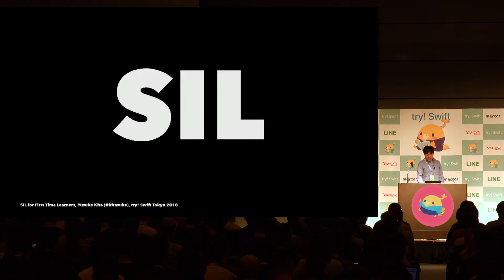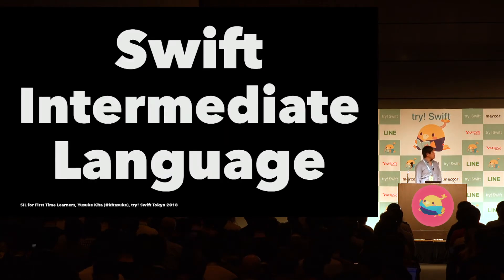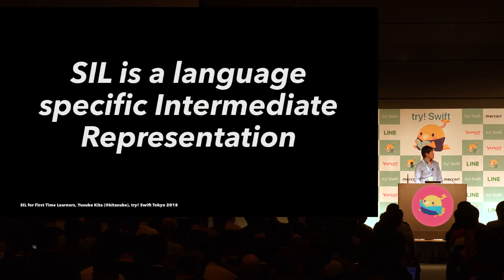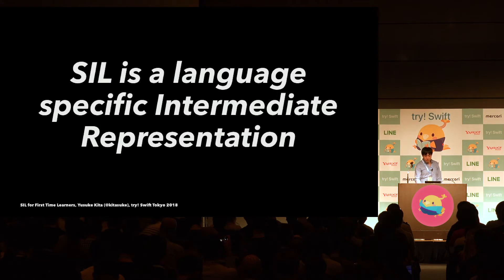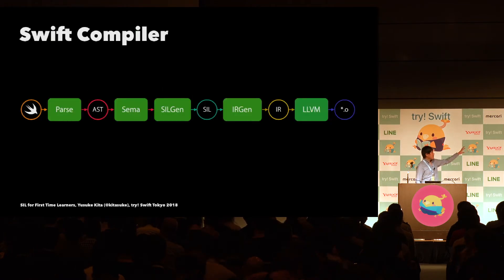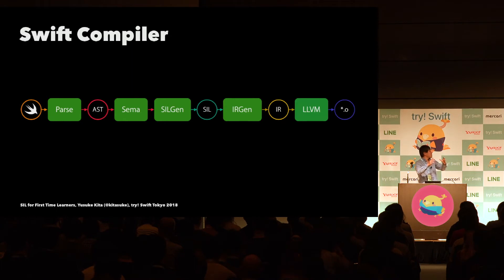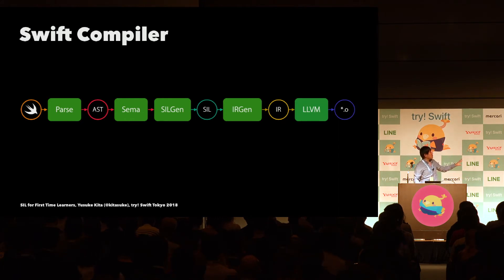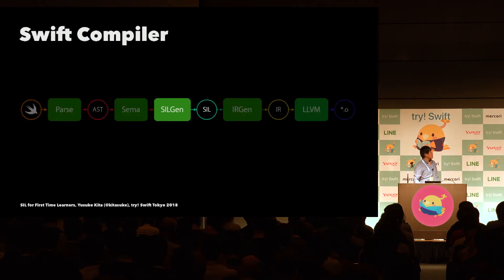So it's about SIL — it stands for Swift Intermediate Language. It's a language-specific intermediate representation, right before LLVM IR, and it's only for Swift because it's a language-specific representation. The Swift programming language runs on the Swift compiler, and here's the pipeline: it takes a Swift source file, constructs an AST, generates SIL, lowers to LLVM IR, and emits binary code. This is too heavy a topic to cover in five minutes, so I'm going to focus on SIL today.